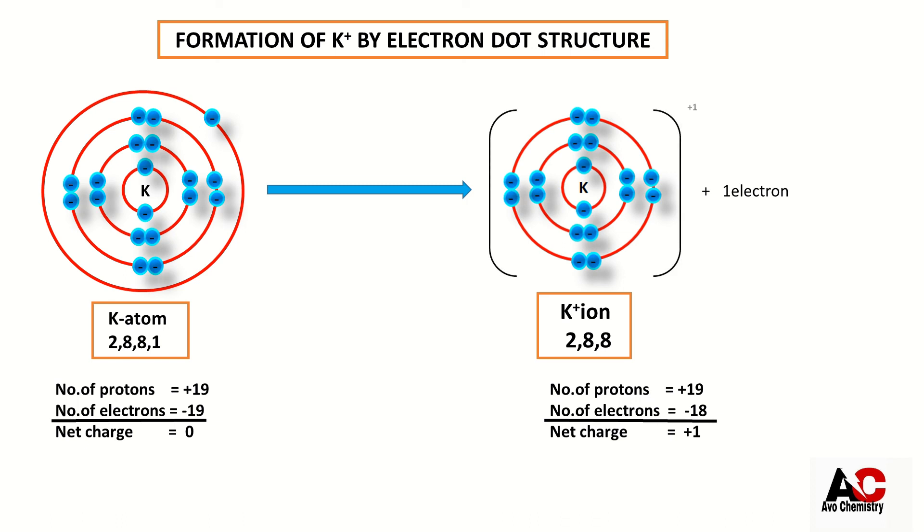Potassium atom, after removing the electron, gets plus 1 charge on it. Now it is not a potassium atom. Now it becomes the ion.